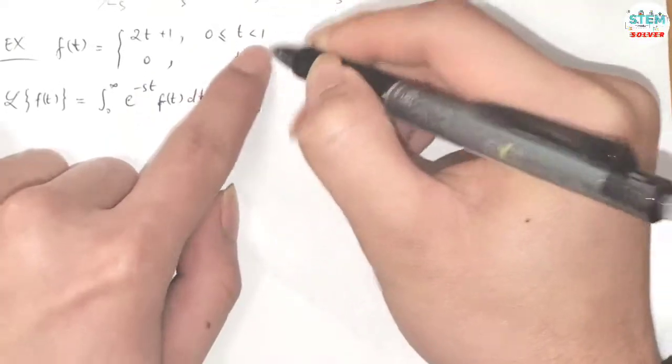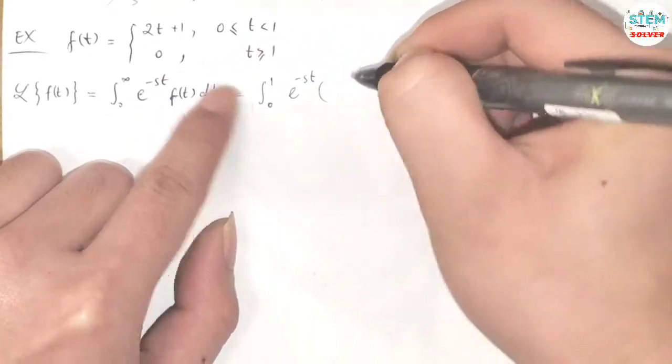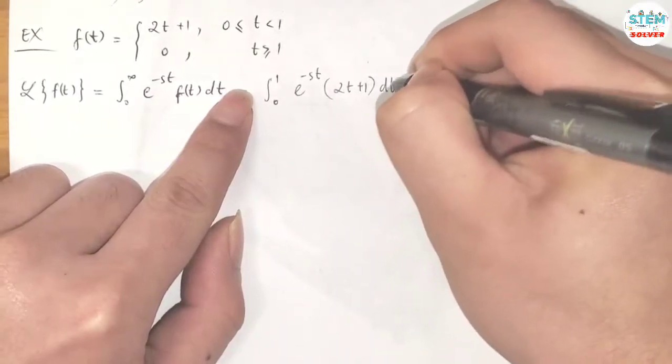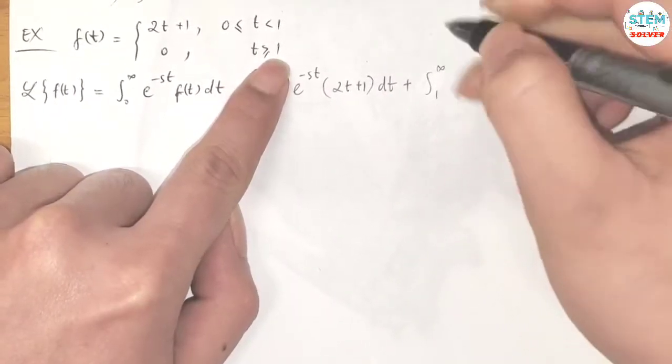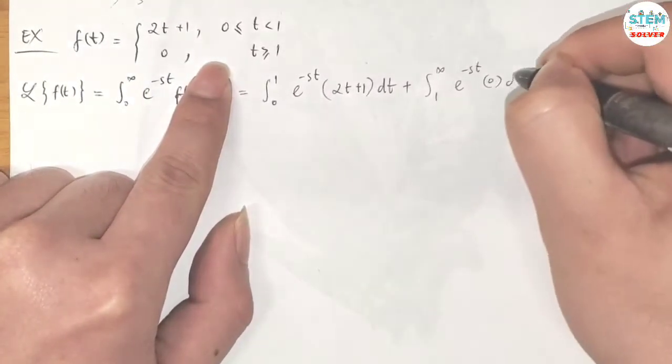So we have the integral from 0 to 1 of e to the negative st times (2t + 1) dt, plus the integral from 1 to infinity of e to the negative st times 0 dt.